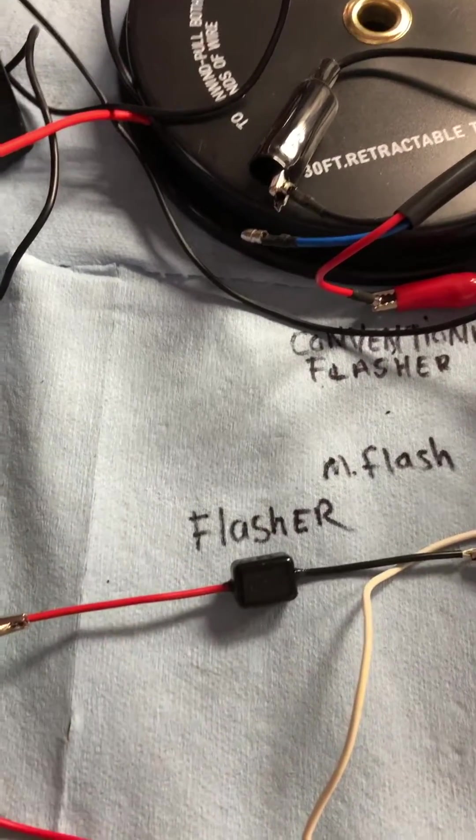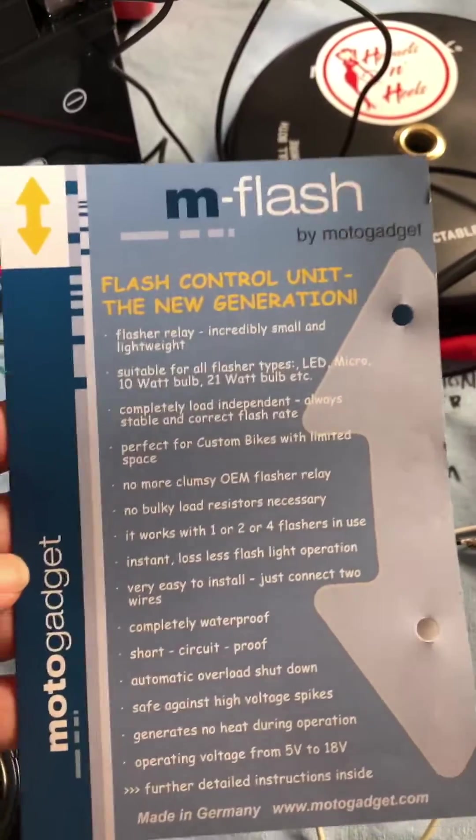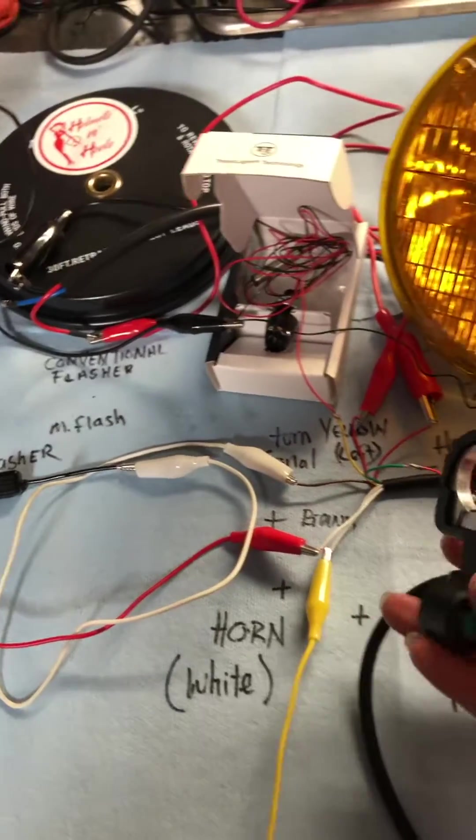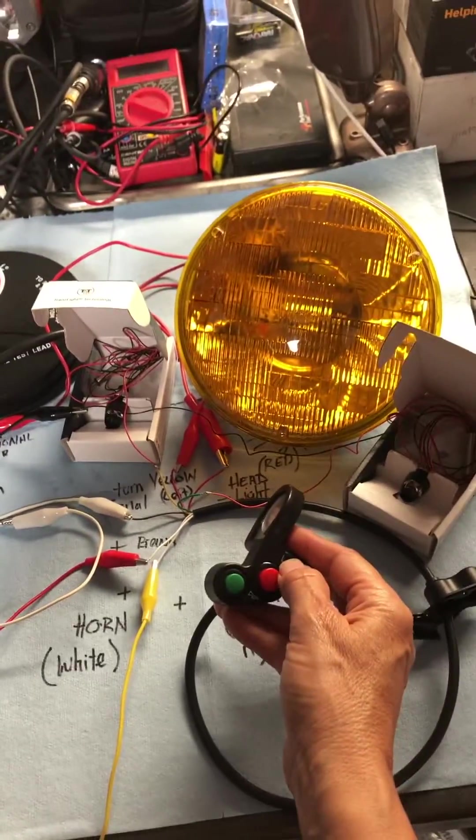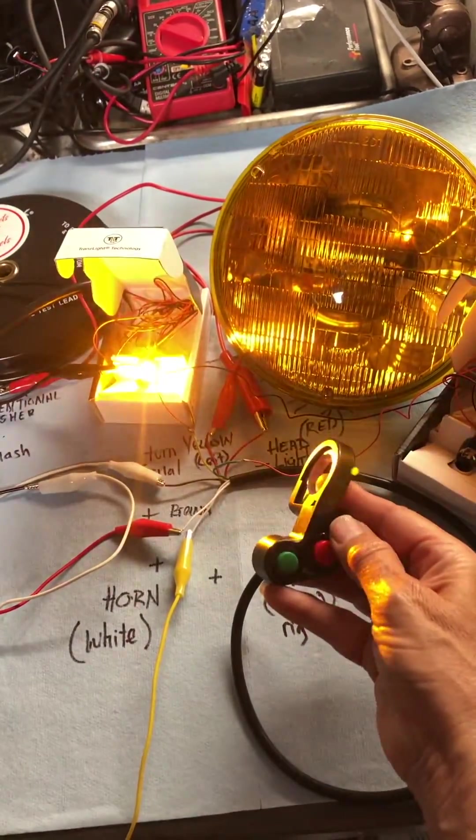I went for this little M flash flasher that's also from Moto gadget. It'll control up to four turn signals, that's about 35 bucks. And everything worked as advertised when I mocked it up. Got my right, my left, my headlight, and my horn.